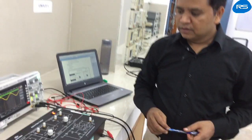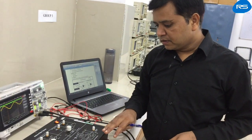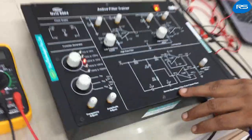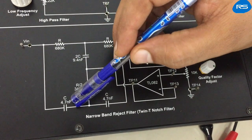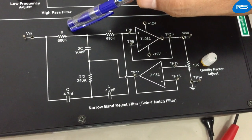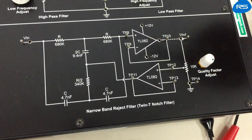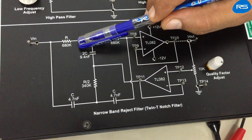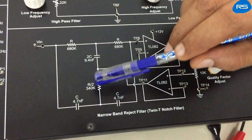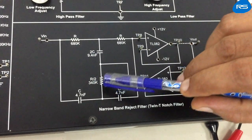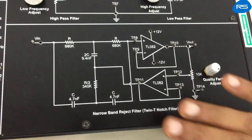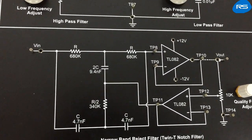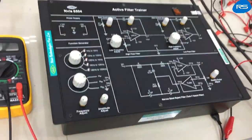Depending upon the values of R and C, we can have different notch frequencies. We have a particular kit for studying the notch filter characteristics. In this circuit, R equals 680 kilo-ohms and the capacitor value is 4.7 nano-farads, so 1/(2πRC) comes out to 50 Hz. Therefore, the notch frequency is 50 Hz in this case.